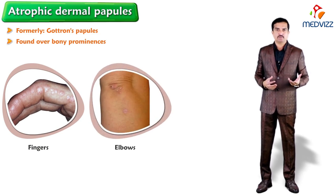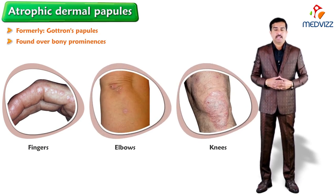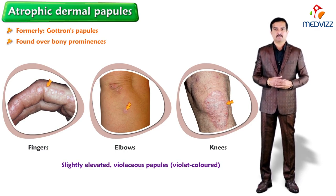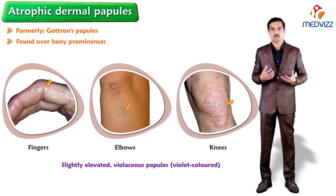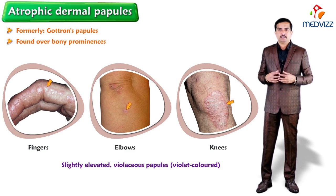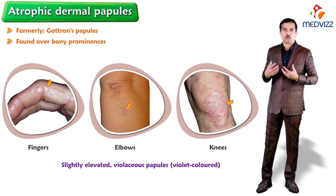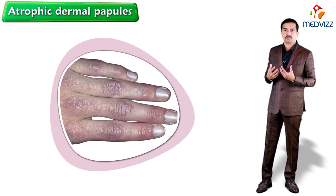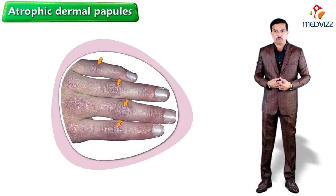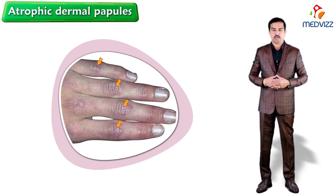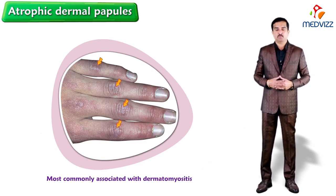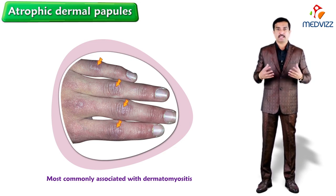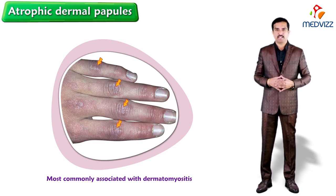These papules are found over bony prominences, especially fingers, elbows, and knees. The lesions are slightly elevated, violaceous — meaning violet-colored — papules and rash, more commonly seen on the dorsal aspect of the interphalangeal joints. They are most commonly associated with the condition known as dermatomyositis.